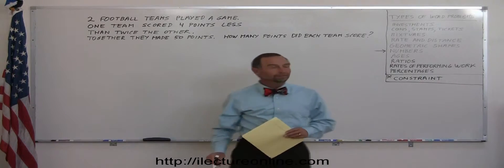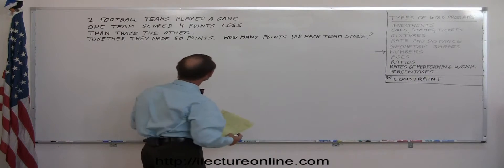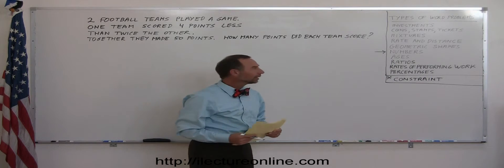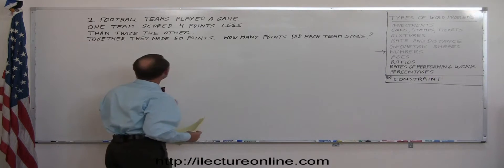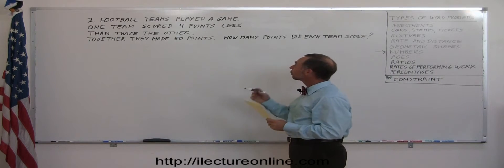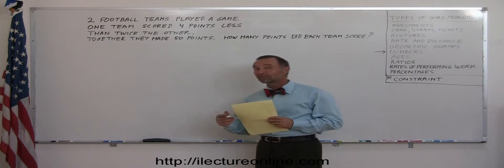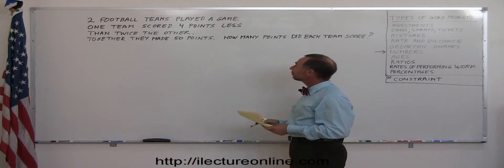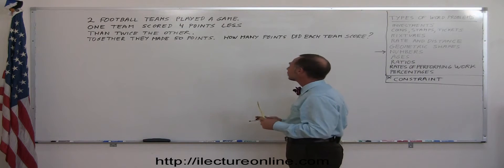Okay, here we have another problem involving numbers, numbers of a different type. Let's say we had two football teams that played a game, they played each other, and one team scored four points less than twice the other, and together they made 50 points. How many points did each team score?